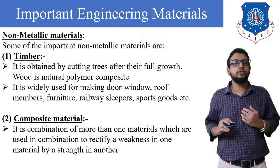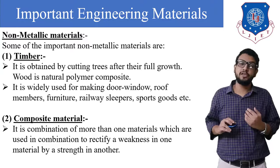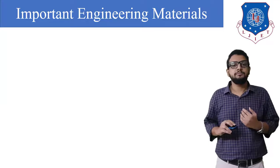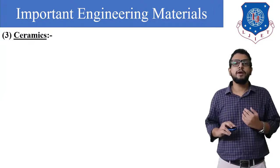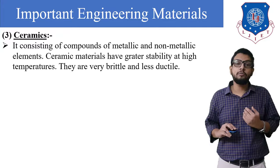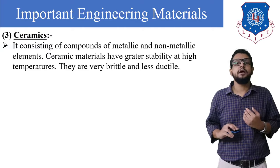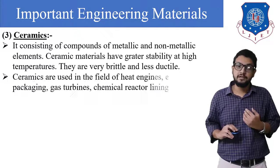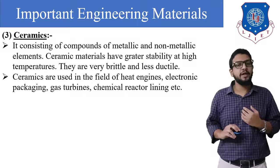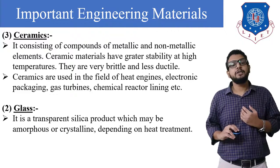The second non-metallic material is composite material. It is a combination of more than one material used in combination to rectify a weakness in one material by strengthening another. Composites may be man-made or natural. The next type is ceramics — consisting of compounds of metallic and non-metallic elements. Ceramic materials have greater stability at high temperatures but are very brittle and less ductile. Ceramics are used in heat engines, electronic packaging, gas turbines, and chemical reactor linings.